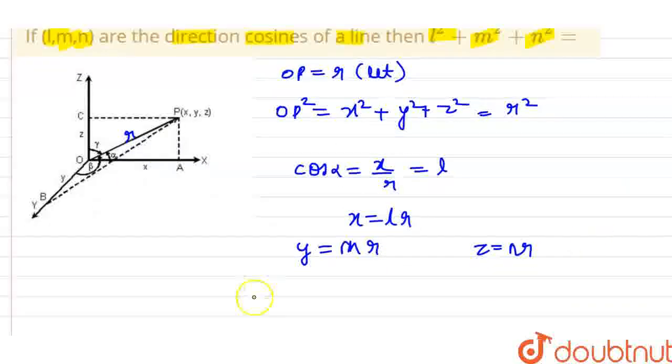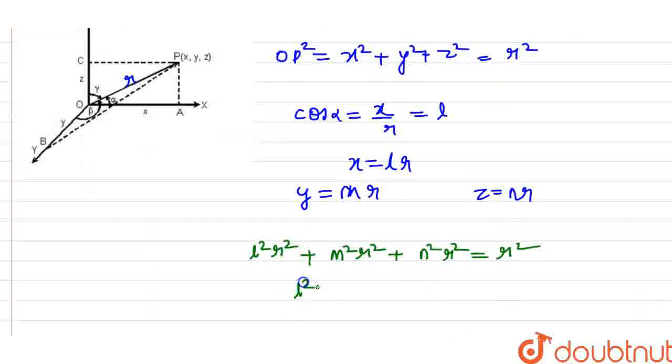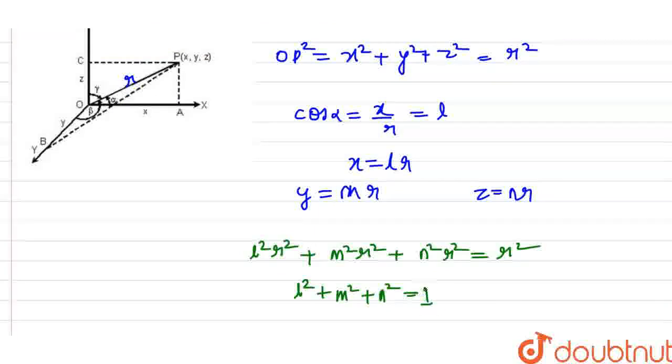Then we get l²r² plus m²r² plus n²r² equals r². If r² is common, l² plus m² plus n² equals 1.